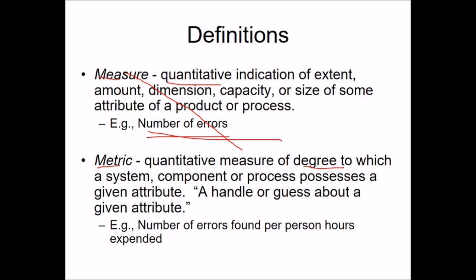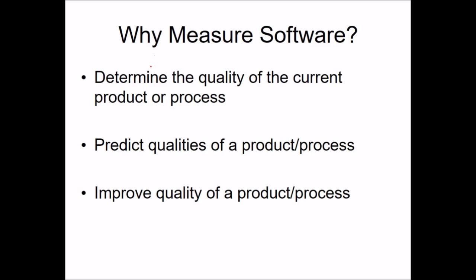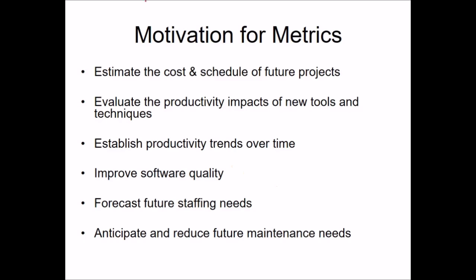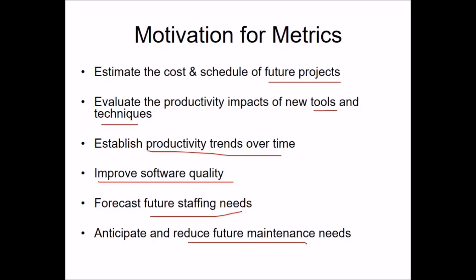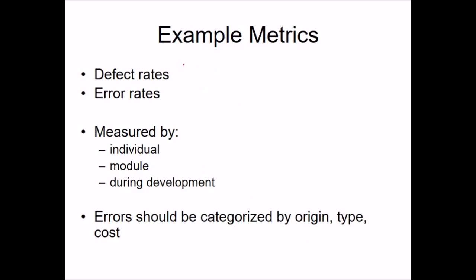Why do we measure software? First, to determine the quality of the current product or process, then to predict quality, and if improvement is needed, to improve the quality. The motivation for metrics includes: estimating the cost and schedule for future products, evaluating the productivity impacts of new tools and techniques, establishing productivity trends over time, improving software quality, forecasting future staffing needs, and anticipating and reducing future maintenance needs.